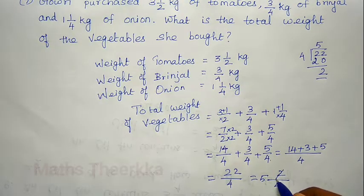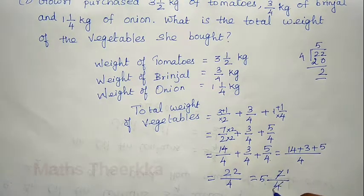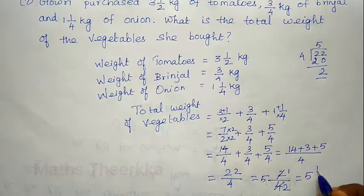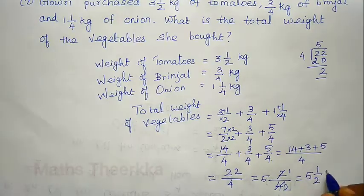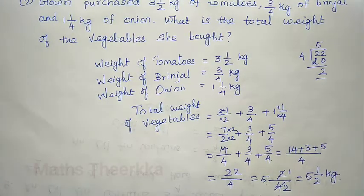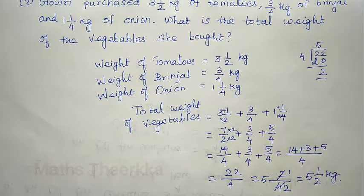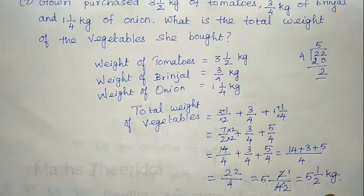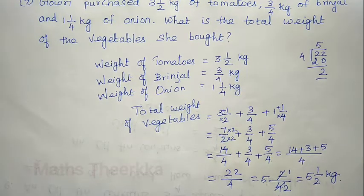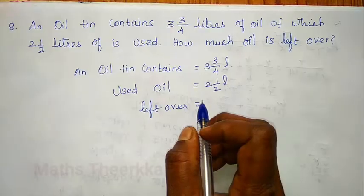So 2 by 4 simplifies to 1 by 2. The total weight is 5 and 1/2 kg. This is the total weight of the vegetables she bought. Thank you.